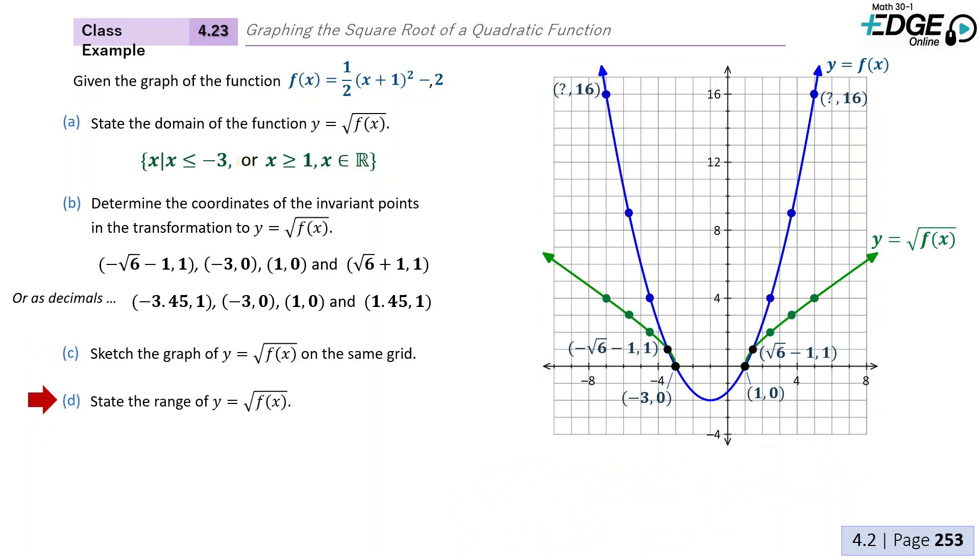Next, let's state the range of y = √f(x). Well, that's pretty straightforward because you can't take the square root of a negative. So it has to be above zero. So y ≥ 0.